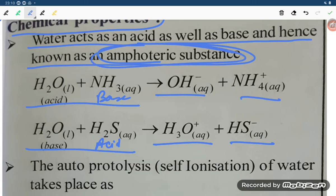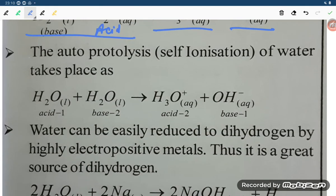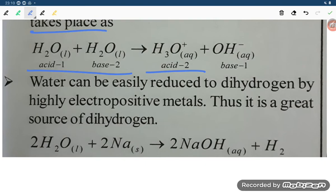The auto protolysis or self-ionization of water takes place as H2O plus H2O gives H3O plus plus OH minus. Water can be easily reduced to dihydrogen by highly electropositive metals.